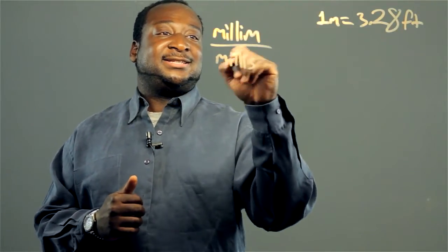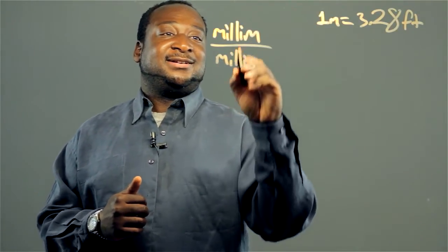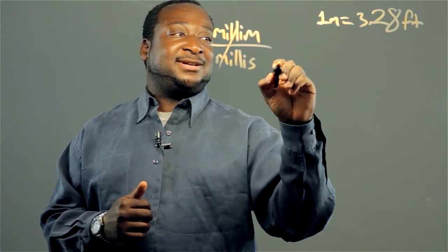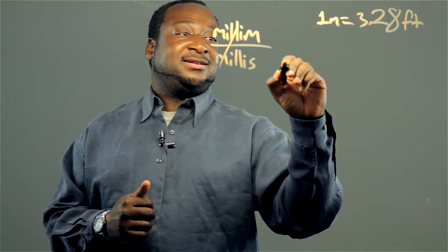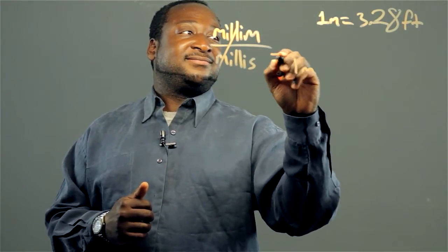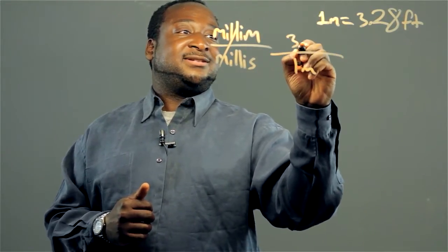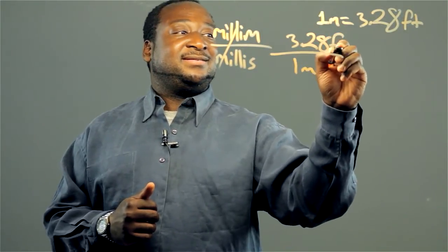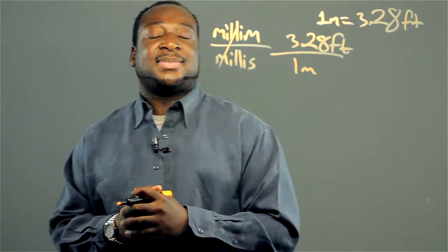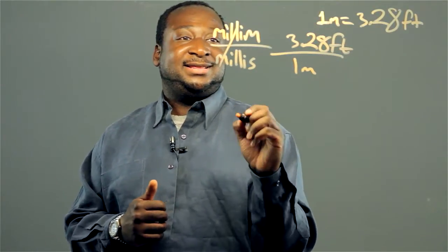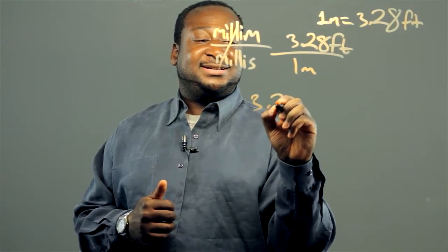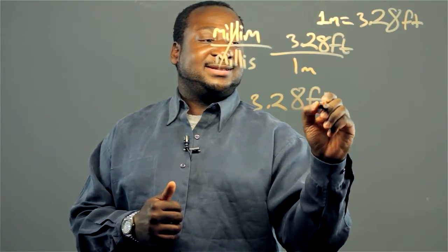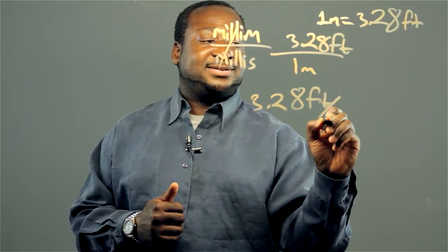Now in this conversion here, our two millis cancel out, so we're going to multiply this 1 meter times 3.28 feet, and thus we get the number 3.28 feet per second.